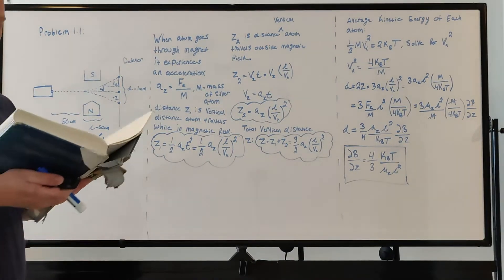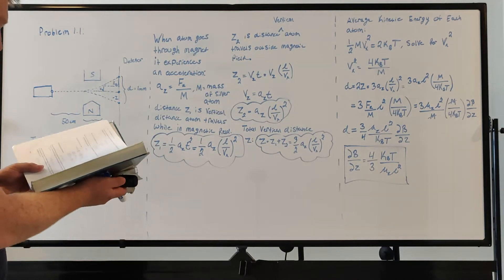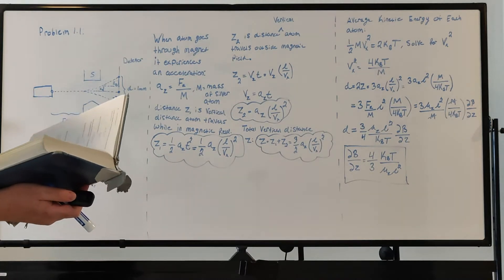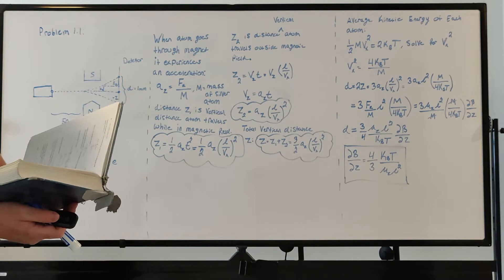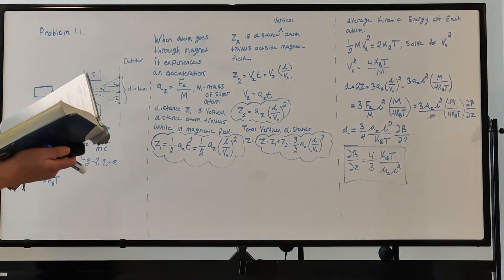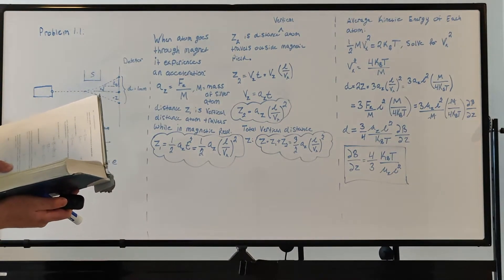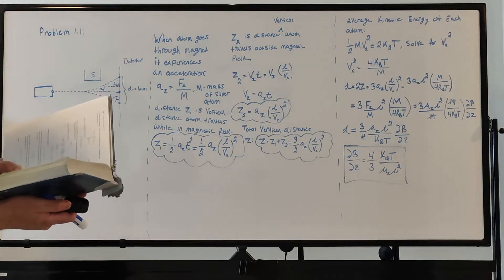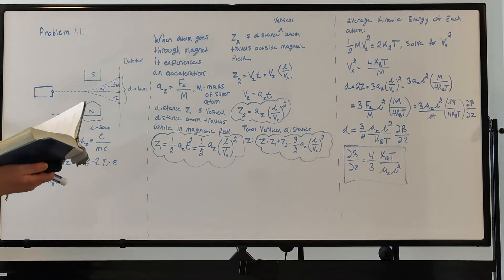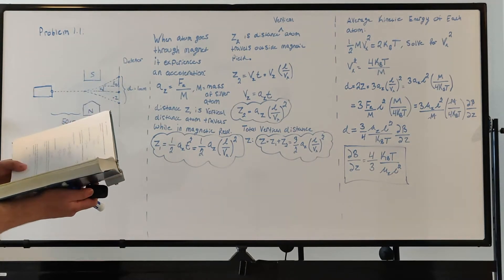This problem has to do with the Stern-Gerlach experiment. It asks us to determine the field gradient of a 50-centimeter-long Stern-Gerlach magnet that would produce a 1-millimeter separation at the detector between spin-up and spin-down silver atoms emitted by an oven at 1500 Kelvin. The detector is located 50 centimeters from the magnet, and the average kinetic energy of the atoms emitted by the oven is 2k_B T.